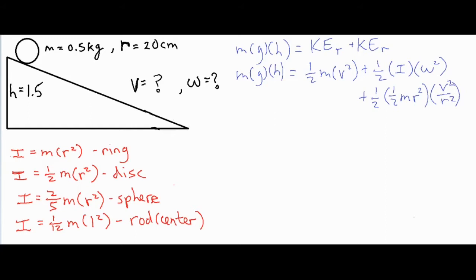Since the entire quantity is squared, these two are both squared. So that's going to simplify down a bunch because we have an r² and r² that are going to cancel out, and then we have ½ times ½ which is ¼ mv².